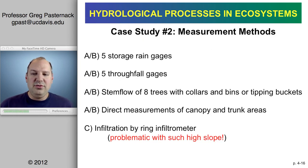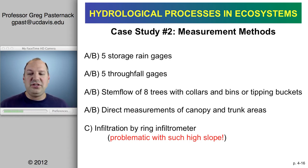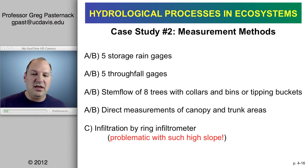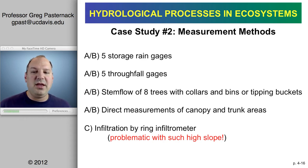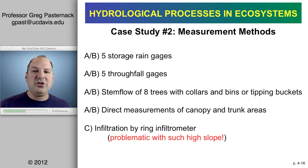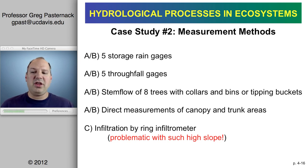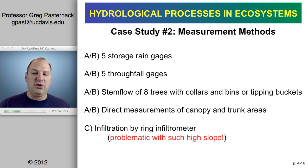They used storage rain gauges, through-fall gauges, stem flow collars with bins or tipping buckets, and direct measurements of canopy and trunk areas. They also measured infiltration — the rate at which water hitting the ground percolates down into the ground, crossing the air-soil boundary — using a ring infiltrometer.